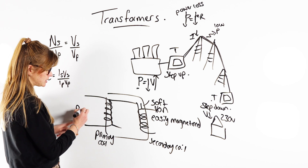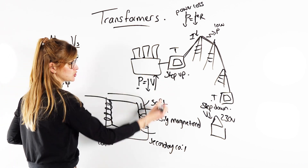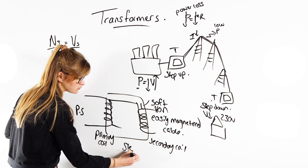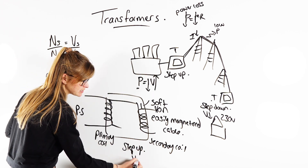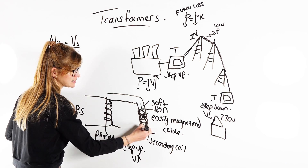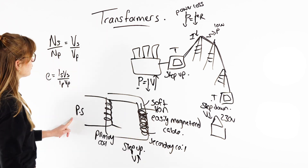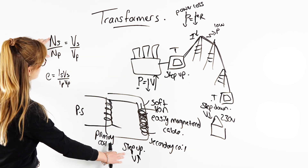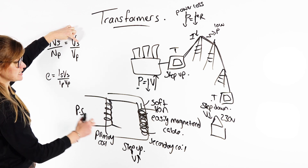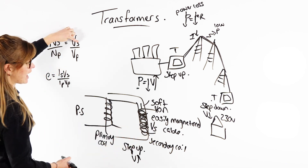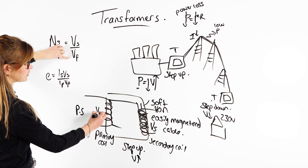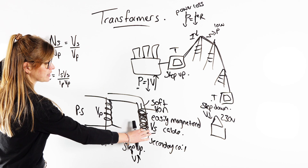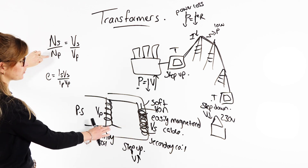This primary side is connected to our power station and the secondary side is connected to our cables. In a step-up transformer, we're increasing the voltage, so there will be more coils of wire on that secondary arm. We know this from the transformer equation: if it's a step-up transformer, the voltage on the secondary is higher than on the primary, so the number of turns on the secondary is greater than the number of turns on the primary.